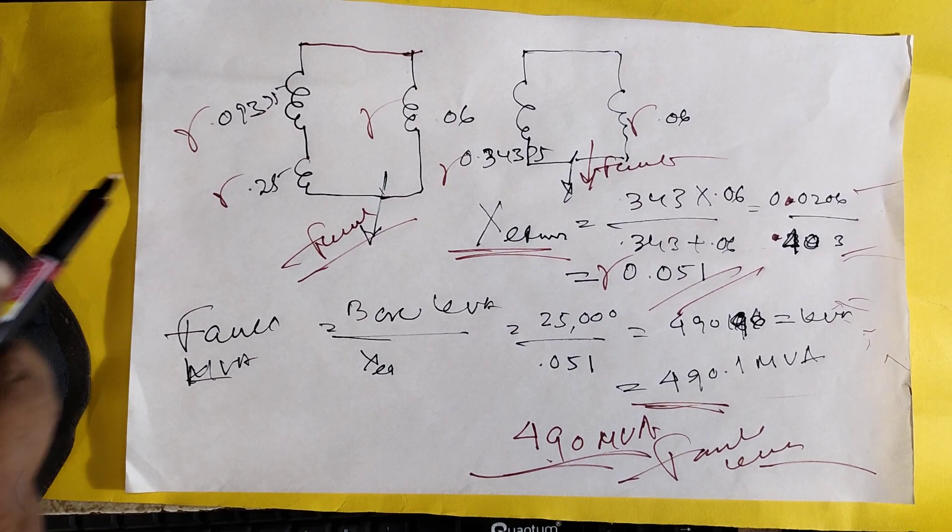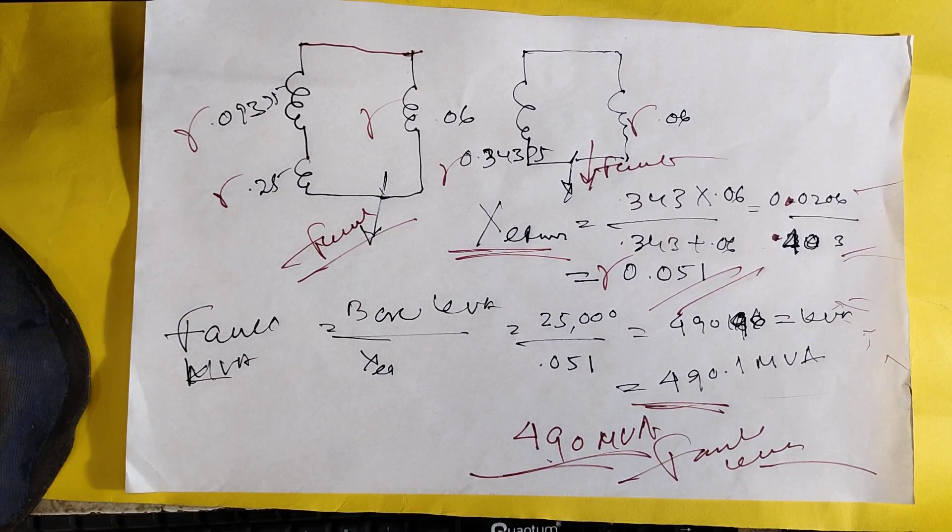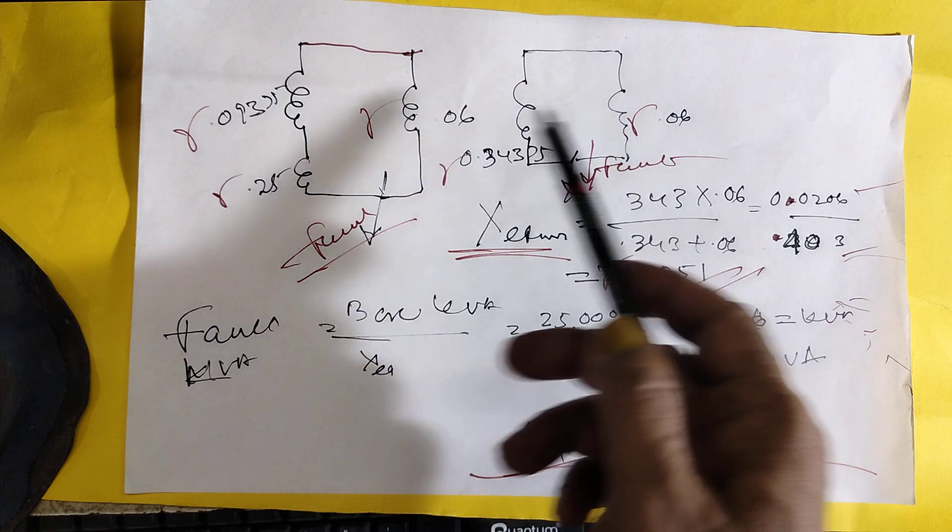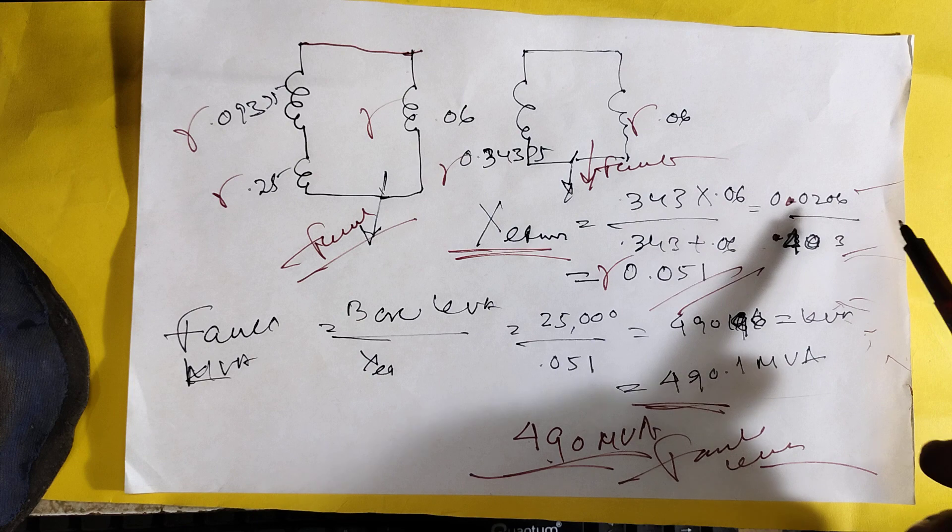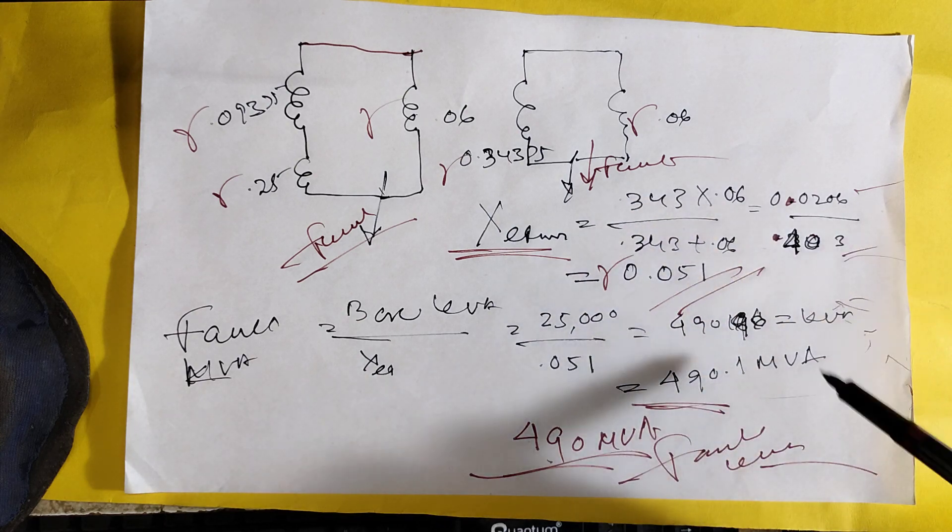Here, these two are series, these two series, and this is parallel to this one. So automatically it will become 0.343, 0.343 and 0.6, 0.06 is coming.